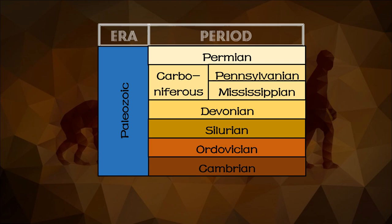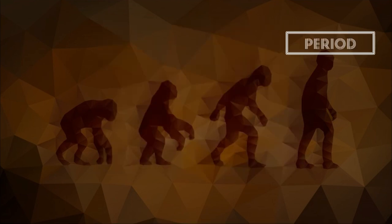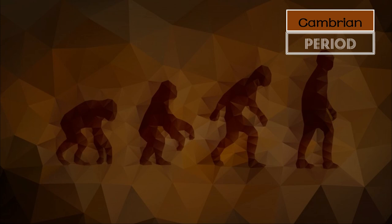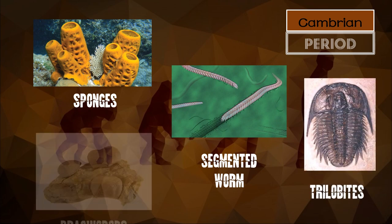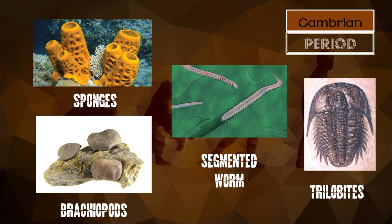The seven periods of the Paleozoic era are: the Cambrian, Ordovician, Silurian, Devonian, Mississippian, Pennsylvanian, and Permian. Life forms in the Cambrian period were sponges, segmented worms, trilobites, and brachiopods. Under the Cambrian period, most of the major groups of animals first appear in the fossil record. It is a time of great evolutionary innovation, with many major groups of organisms appearing within a span of only 40 million years.